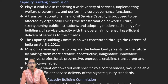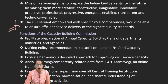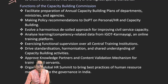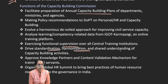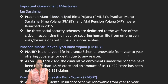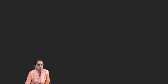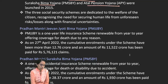For civil services, capacity building is important — strengthening public institutions, building modern technology, implementing Mission Karmayogi to empower civil servants for high-quality service delivery. Annual capacity building plans, supervision, standardization, harmonization, and knowledge partnerships are coming together with global governance summits. Among other milestones are Jan Suraksha schemes: Pradhan Mantri Suraksha Bima Yojana, Pradhan Mantri Jeevan Jyoti Bima Yojana, and Atal Pension Yojana.